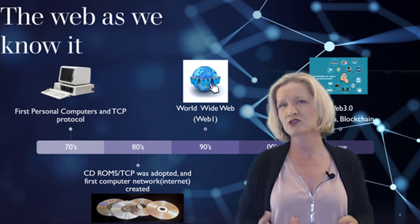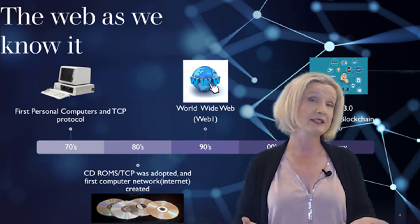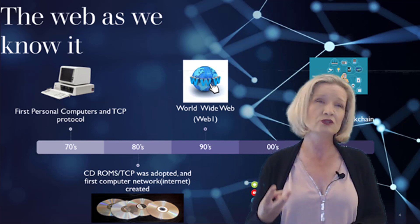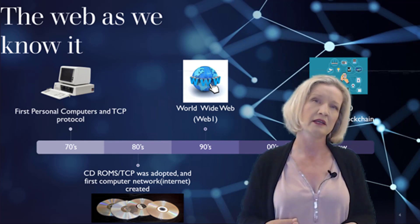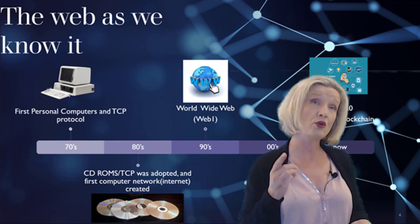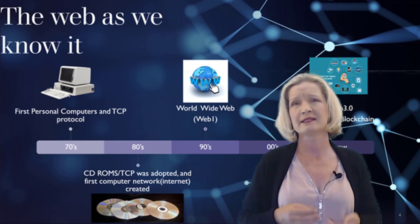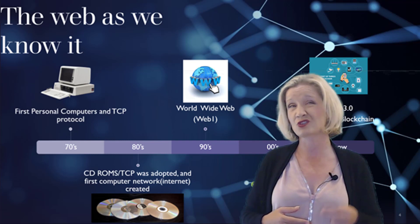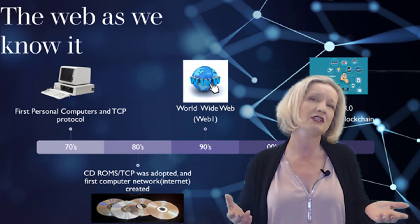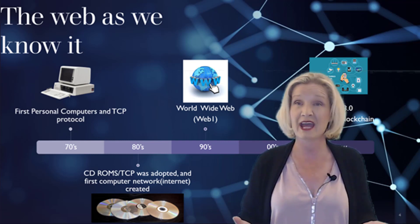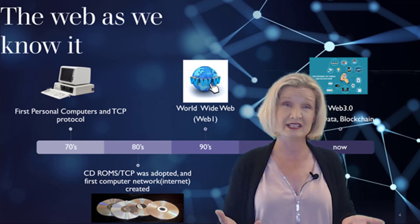But the excessive centralization has led to many problems. For example, three companies control 80% of the online logins — three companies that know who's doing what online, where, and when. 60% of the web storage is controlled by just two companies. This has led to constant abuse of power with data, tracking, ads, privacy, and censorship.